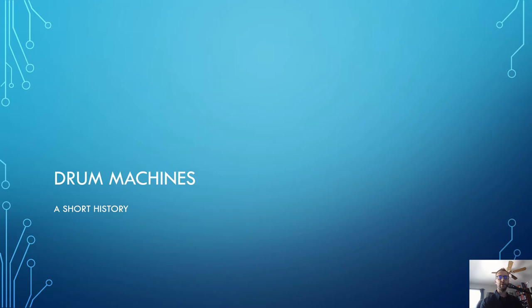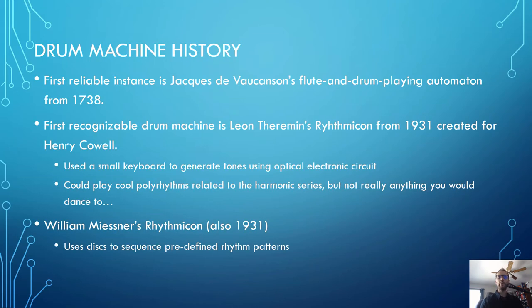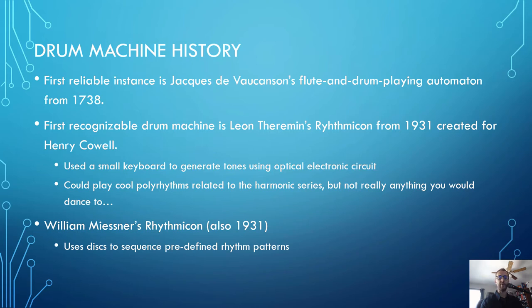Let's begin with drum machines. The first reliable instance of a drum machine is Jacques de Vaucasson's Flute and Drum Playing Automaton, created in 1738. There are earlier machines that would have played a drum using clockwork gears, but we only have accounts that they may or may not have existed. There is no concrete evidence, no plans, no drawings — just a couple of mentions in books. 1738 is the first we can verify.